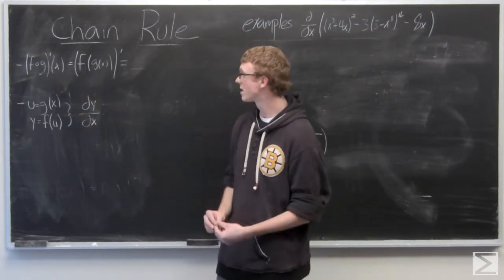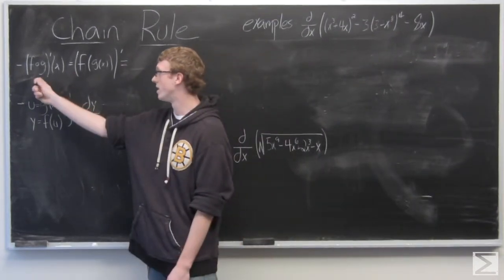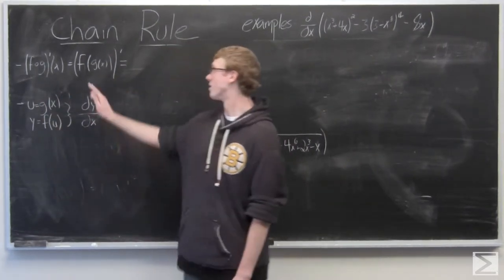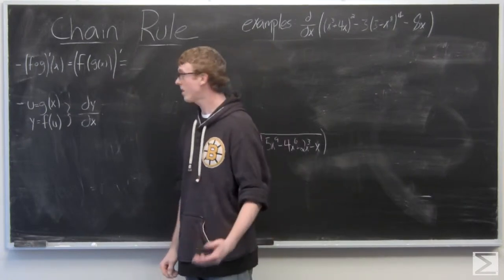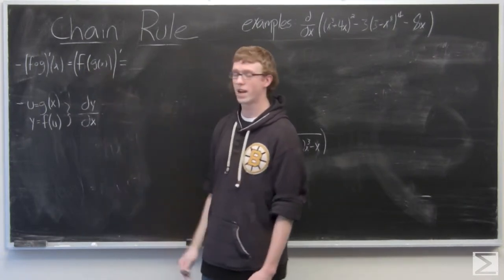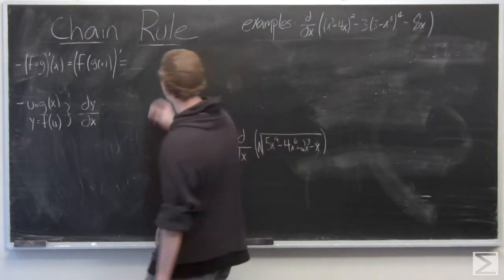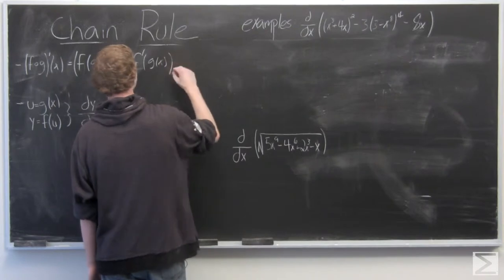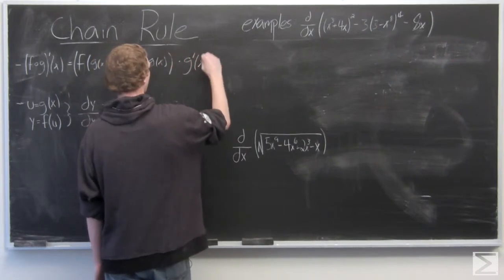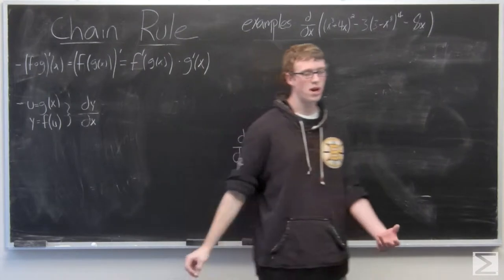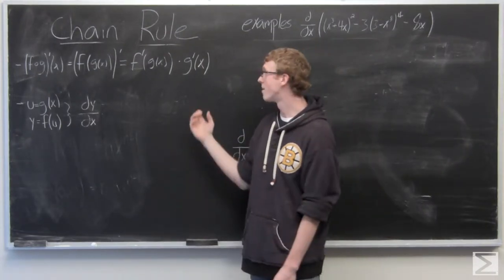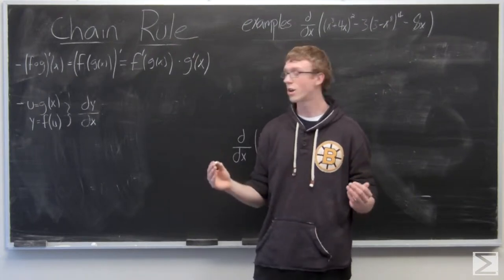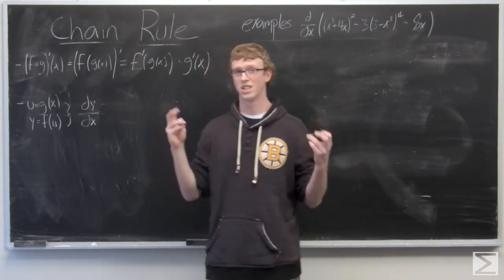Basically f of g of x, sometimes written in different notations. Now we have the derivative of f of g of x is going to equal f prime of g of x times g prime of x. So it's basically the derivative of the entire function times the derivative of what's inside.